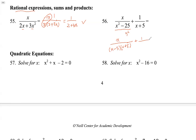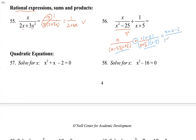The second fraction is 1 over (x plus 5). When adding two rational expressions — just like adding fractions — we need a common denominator. We multiply the second fraction by (x minus 5) over (x minus 5). Now we have a common denominator and can combine the numerators using addition, giving us (x plus x minus 5) divided by (x plus 5)(x minus 5).